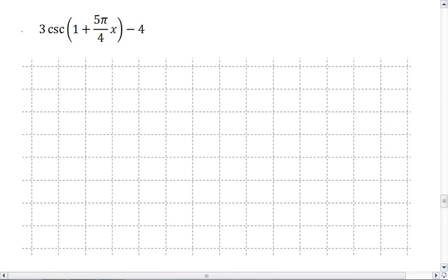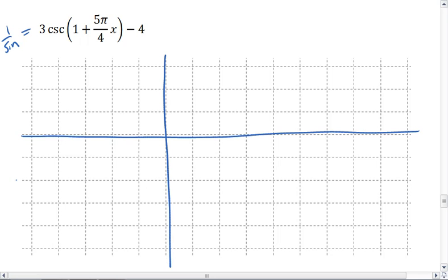Here we're looking with cosecant. Remember cosecant is 1 over sine. We have a vertical shift of negative 4 and put us down here. An amplitude of 3. That will bring us up to negative 1 and down to negative 7. So here's our vertical shift, here's our amplitude.